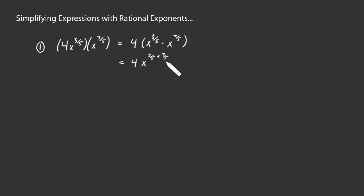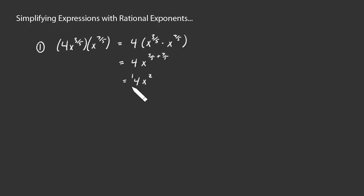3 fifths plus 7 fifths is 10 fifths, or 2. And there we go — we've got our first answer.